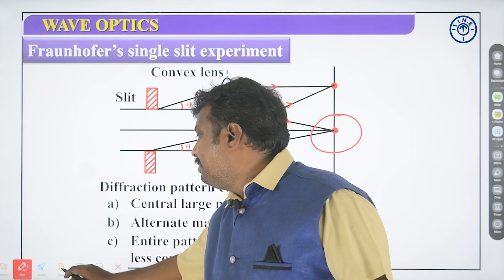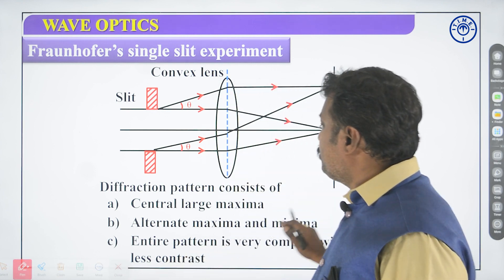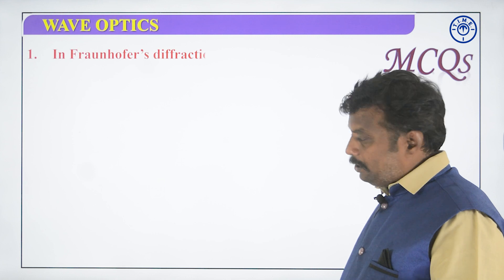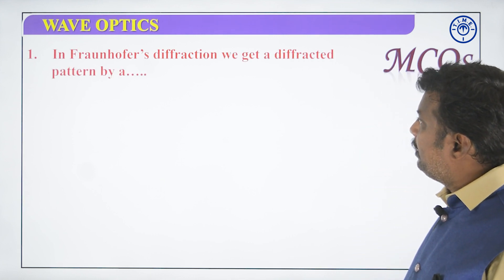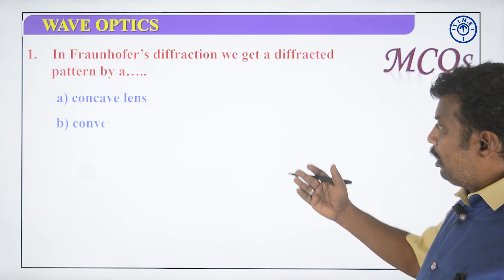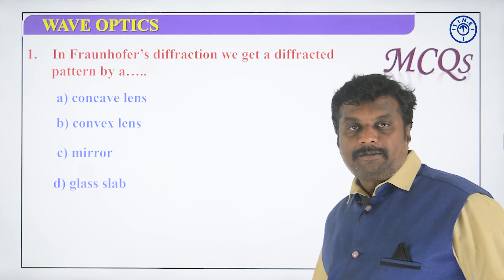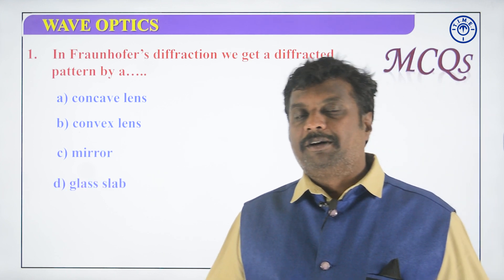Let us see some MCQs on this Fraunhofer single slit experiment. So in Fraunhofer diffraction, we get a diffracted pattern by... what lines have been very easy. You should answer the questions which are known to you first. Remember correct answer.